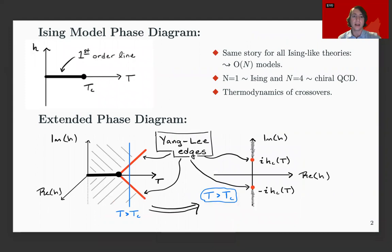So the most common example of an O(N) model is the Ising model. So a plot of the Ising model phase diagram, a very common phase diagram, in the top left. The vertical axis H is our magnetic field. The horizontal axis T is our temperature.